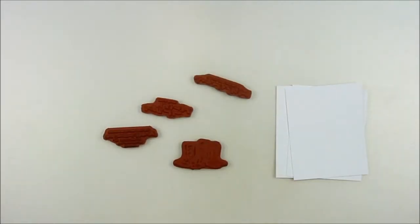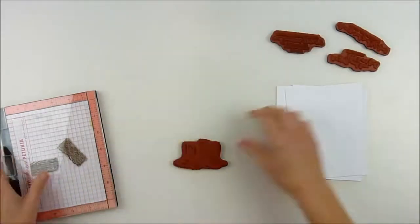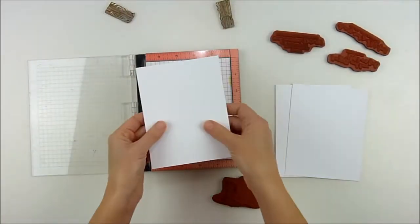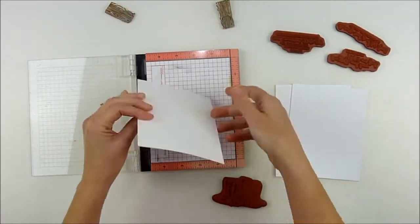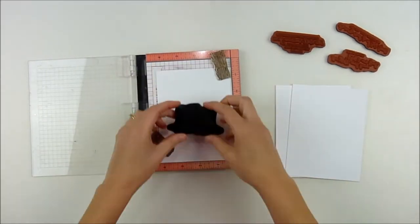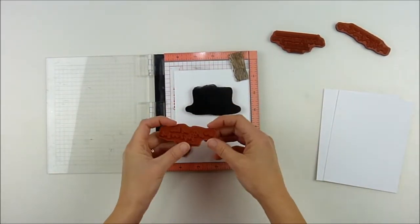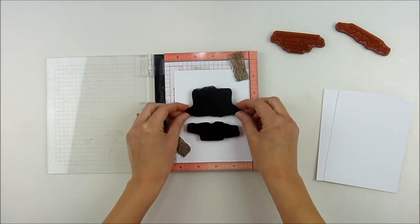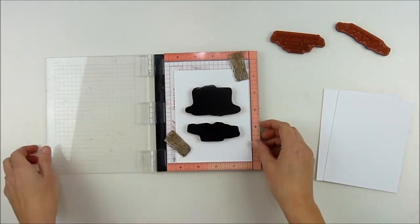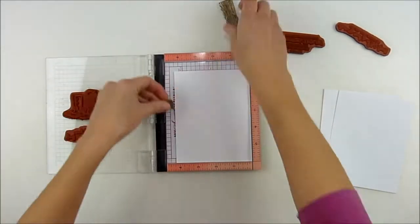I'm using some Ranger distress watercolor paper. I love this paper because it's one of the whitest ones I found as far as color. Some watercolor paper can be kind of off-white and I love that there are two different options for texture. The reverse side is a little smoother, the front side has a little more texture.